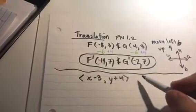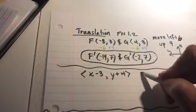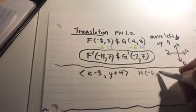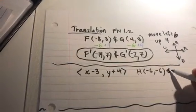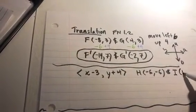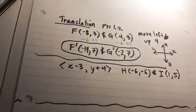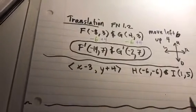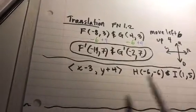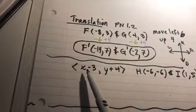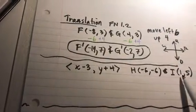So imagine they said take the coordinate H, negative 6, negative 6, and I, 1, 5. Pause the video if you want to rewrite that.